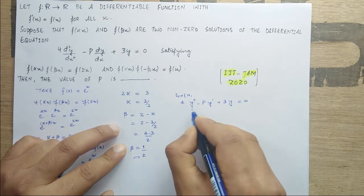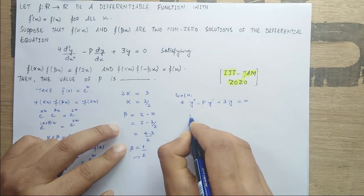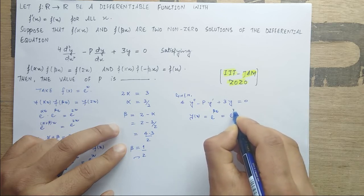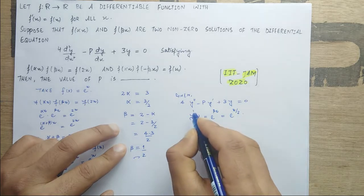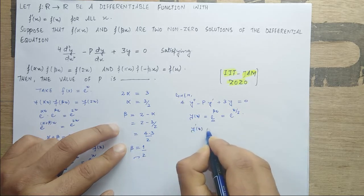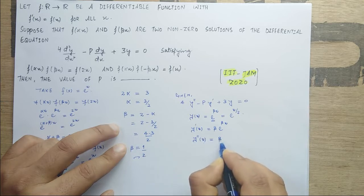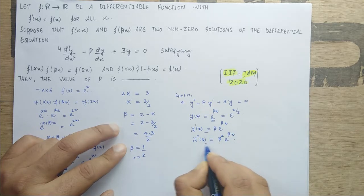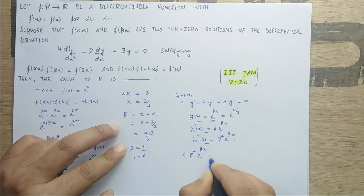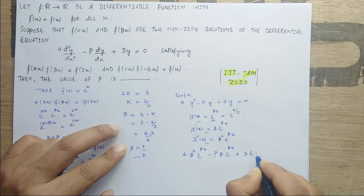Here y'' is the second derivative of y with respect to x and y' is the first derivative. Take y(x) = e^(βx) = e^(x/2). Then y'(x) = β·e^(βx) and y''(x) = β²·e^(βx). Substituting into the differential equation: 4β²·e^(βx) - p·β·e^(βx) + 3·e^(βx) = 0.